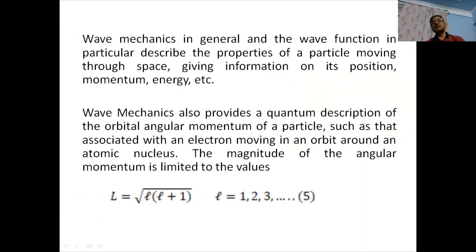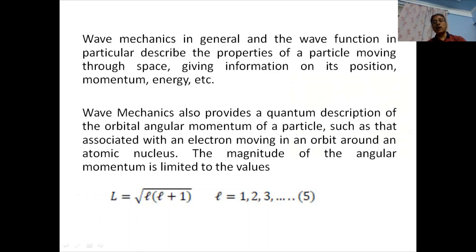Wave mechanics in general, and the wave function in particular, describe the properties of a particle moving through space, giving information on its position, momentum, and energy. Wave mechanics also provides a quantum description of the orbital angular momentum of a particle, such as that associated with an electron moving in an orbit around an atomic nucleus. The magnitude of the angular momentum is quantized: L = √(l(l+1)) ℏ, where l = 1, 2, 3, etc.